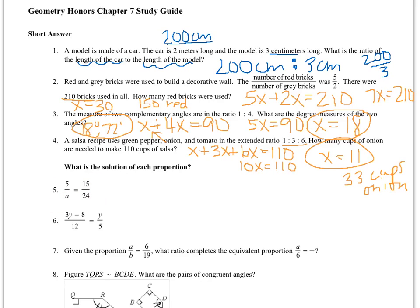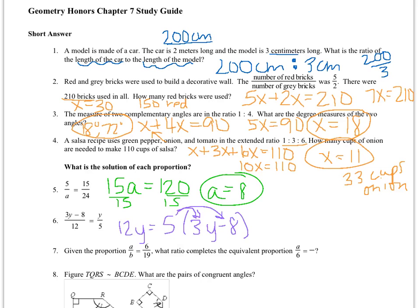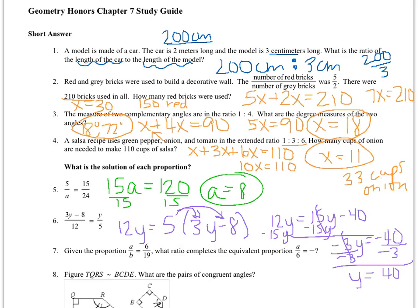For 5 and 6, I just need to do some cross multiplication. When I cross multiply, I get 15a equals 120. I divide that by 15 to find out that a equals 8. I'm going to do the same thing with 6. I'm going to cross multiply, but here I need to do a little bit of distribution. So I get 12y equals 5 times 3y minus 8. I have to distribute in my 5 into those parentheses. So I get 12y equals 15y minus 40. I'm going to move my 15 over to the other side and I get negative 3y equals negative 40. Dividing by negative 3 is going to give me a decimal. So instead of writing a decimal, I'm just going to leave my answer as y equals 40 over 3.